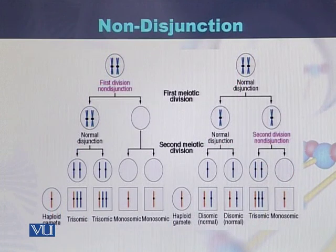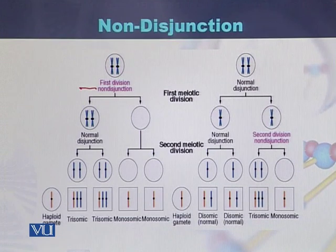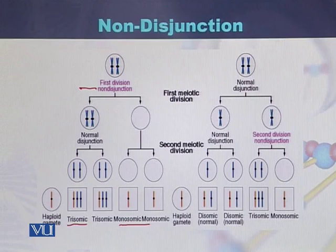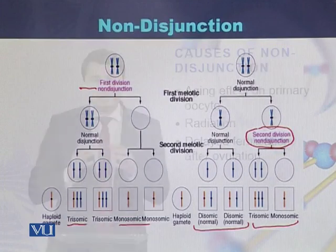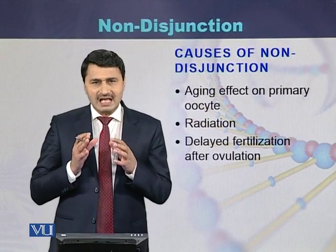In this diagram, as a result of non-disjunction during the first meiotic phase, the cells produced will be trisomic and monosomic — two cells are trisomic while the remaining two are monosomic. On the other hand, if non-disjunction occurs in the second division, some cells are normal while the two affected cells are either monosomic or trisomic.